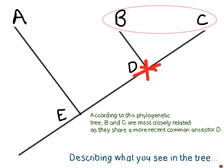You look at the phylogenetic tree and identify what we call sister taxa — taxa that are most closely related. In this tree, B and C are most closely related because as you move back in time, those two are the ones that share the most recent common ancestor, represented by D in this diagram.